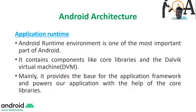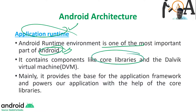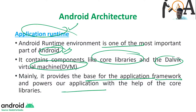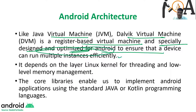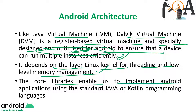Now let's come to Android Runtime. The Android Runtime environment is one of the most important parts of Android. It contains components like Core Libraries and the Dalvik Virtual Machine. It provides the base for the Application Framework and powers our application with the help of Core Libraries. The Dalvik Virtual Machine is a register-based virtual machine, especially designed and optimized for Android to ensure a device can run multiple instances efficiently. It depends on the Linux kernel for threading and low-level memory management. The Core Libraries enable us to implement Android applications using standard Java or Kotlin programming languages.